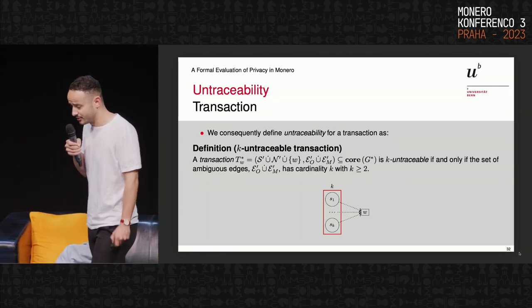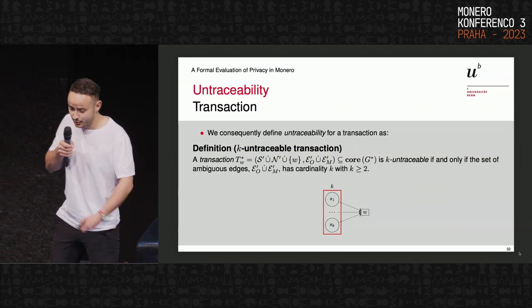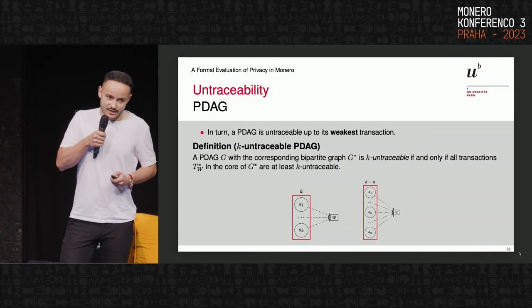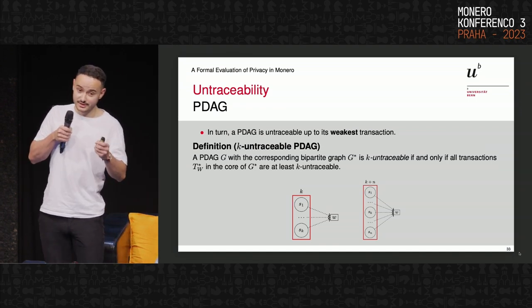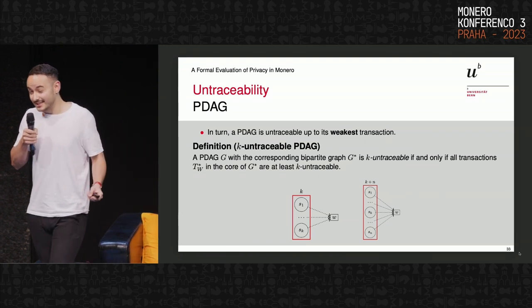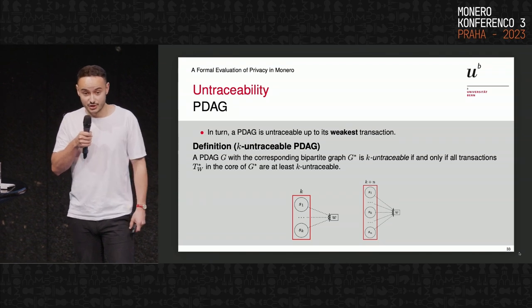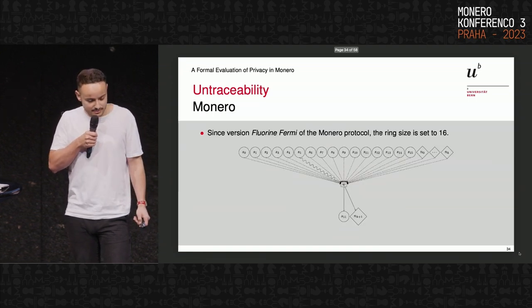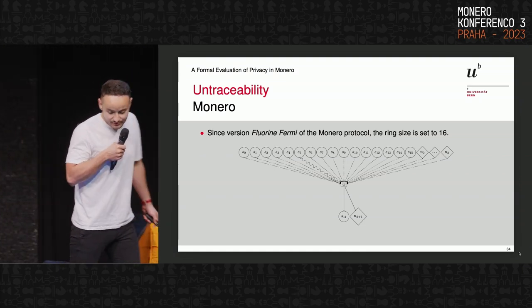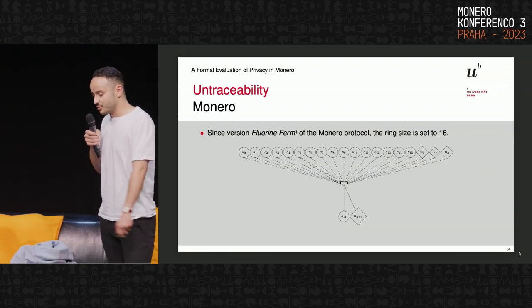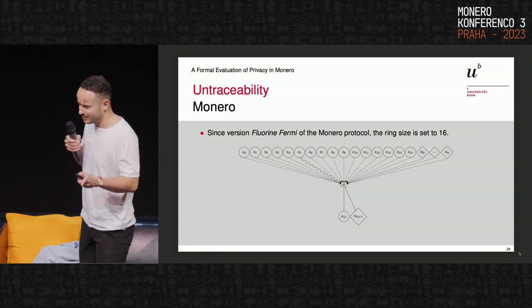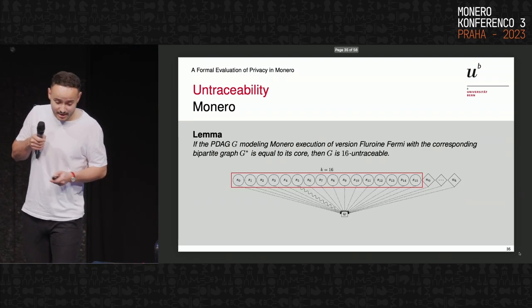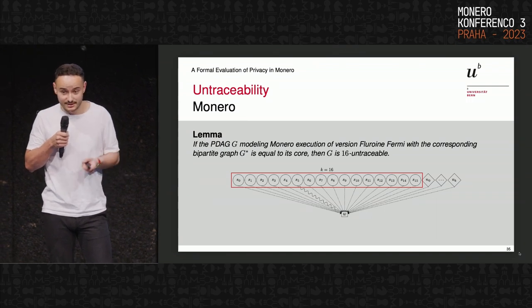Now for the full P-DAG: the P-DAG is untraceable up to its weakest transaction — the smallest k — and all transactions must be at least k-untraceable for the P-DAG to be k-untraceable, because if there is even one visible consuming edge the full P-DAG is not untraceable. For Monero, the ring size was upgraded to 16 recently. If the core of G equals G, then k equals 16, so Monero is 16-untraceable.